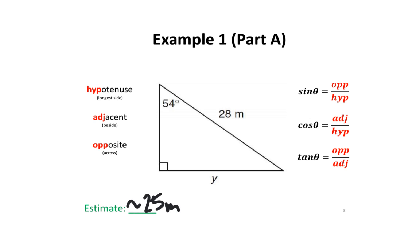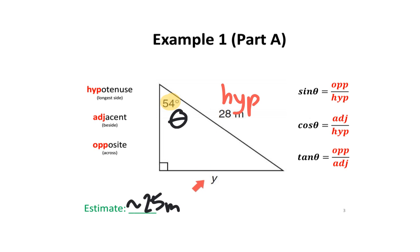We are going to position ourselves at the 54-degree angle — you can think of this as theta. If we're positioned here, that means this side is the hypotenuse, since it is the longest side. This side would be the opposite side, since it is located across from us. And this side would be the adjacent side, since it is located beside us.